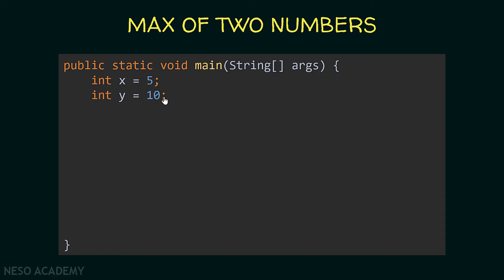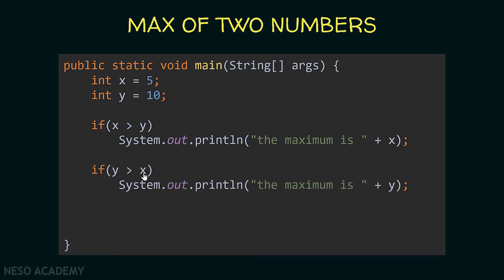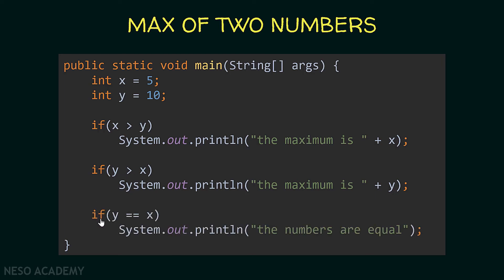Here is the solution. We have x and y. I use an if statement: if x is greater than y, print that the maximum is x. If x is not greater than y, that statement is skipped. Then a second if statement: if y is greater than x, print that the maximum is y. But what if x equals y? Both conditions would be false and nothing would be printed. So I add a third if statement: if y equals x, print that the numbers are equal. This shows that in programming we must take every case into consideration.